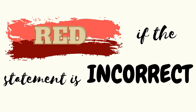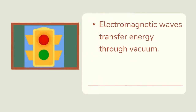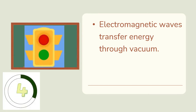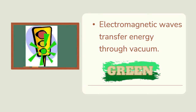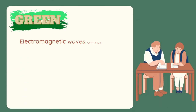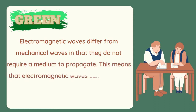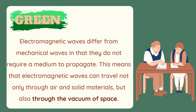Number one: electromagnetic waves transfer energy through vacuum. You have five seconds to answer. The answer is green. Electromagnetic waves differ from mechanical waves in that they do not require a medium to propagate. This means that electromagnetic waves can travel not only through air and solid materials, but also through the vacuum of space.